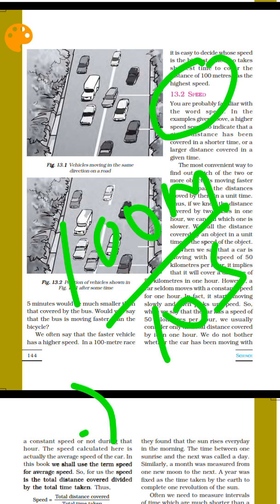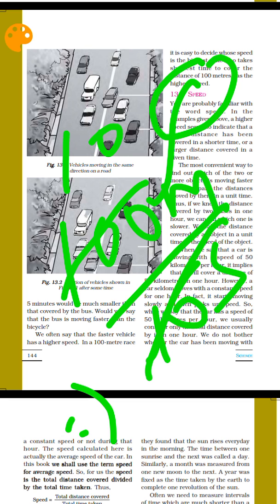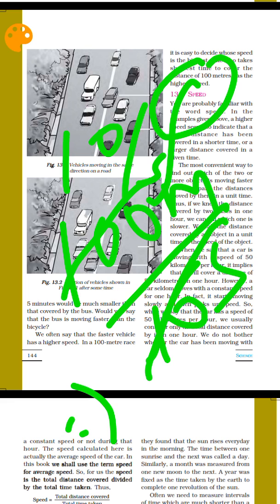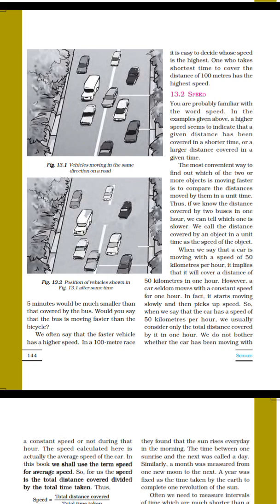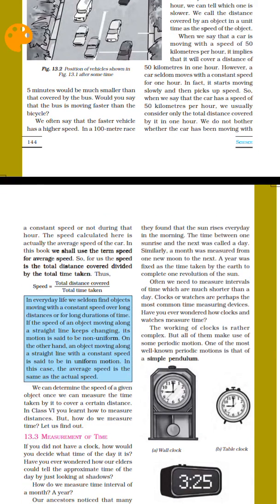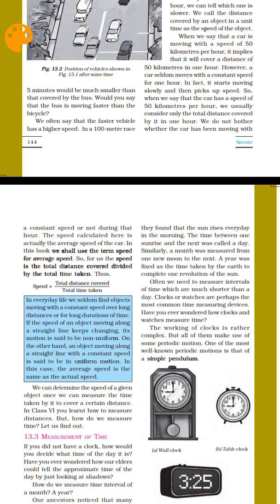So, 100 meters distance covered in 10 seconds will give 10 meters per second speed. This is the speed formula: speed is total distance covered divided by total time taken. That is the definition of speed.